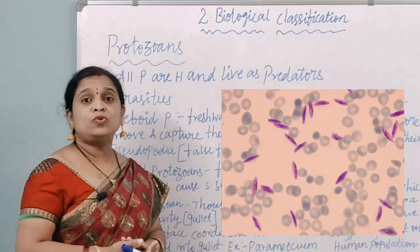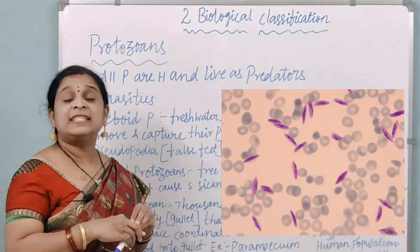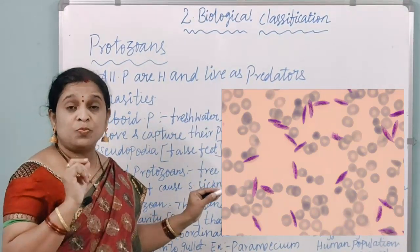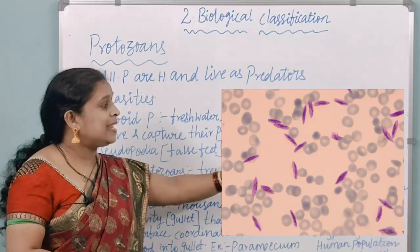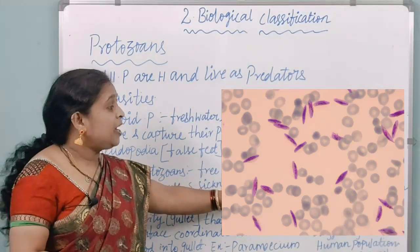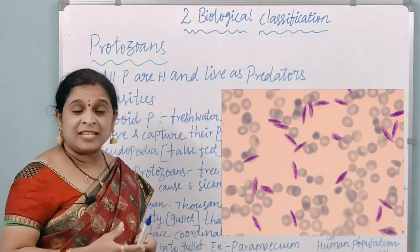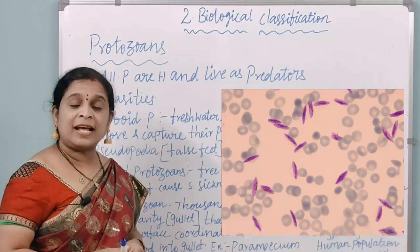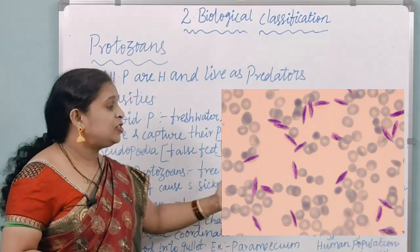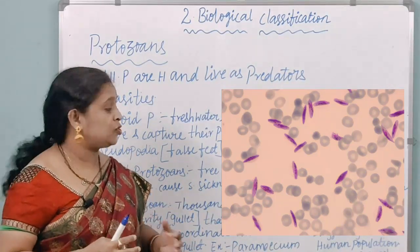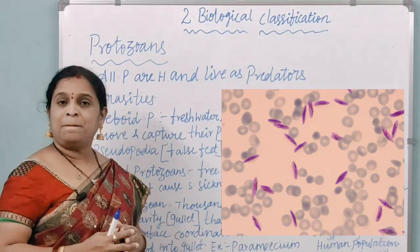The fourth type is sporozoans, which are infectious. In their life cycle there is a spore-like stage. They are notorious, and the notorious example is Plasmodium, otherwise called the malaria parasite, which causes malaria and has a staggering effect on the human population.